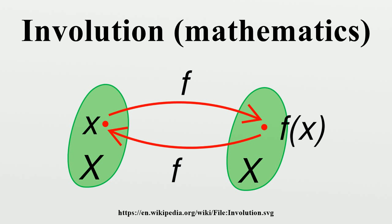General properties: Any involution is a bijection. The identity map is a trivial example of an involution. Common examples in mathematics of non-trivial involutions include multiplication by minus one in arithmetic, the taking of reciprocals, complementation in set theory and complex conjugation.